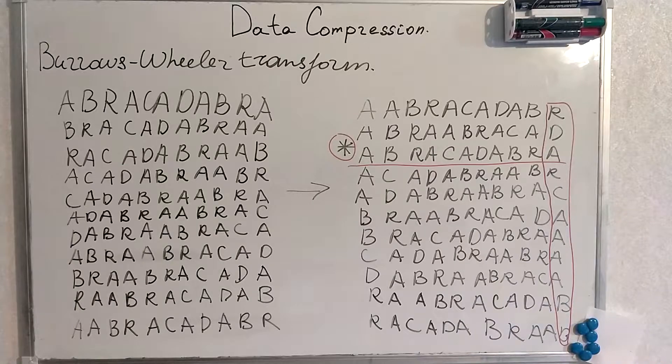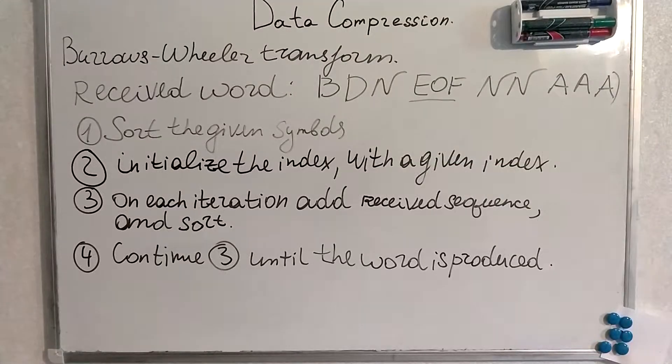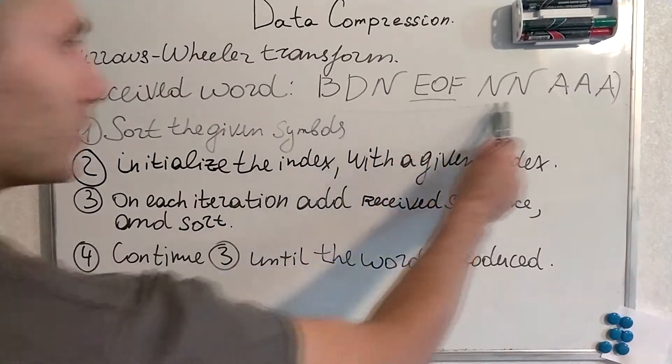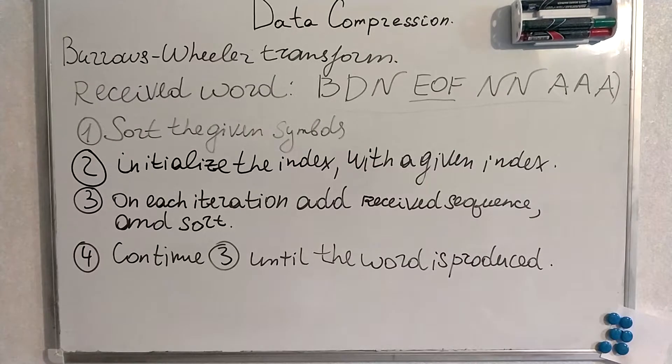Now we will proceed to the decoding part. This is the formal definition of the decoding scheme but I think the example will explain it much better. We will sort the given symbols, initialize the index and on each iteration we will add this received word, received sequence to what we have and sort once again. And we will continue it until the word is produced. Now let's go to the example.